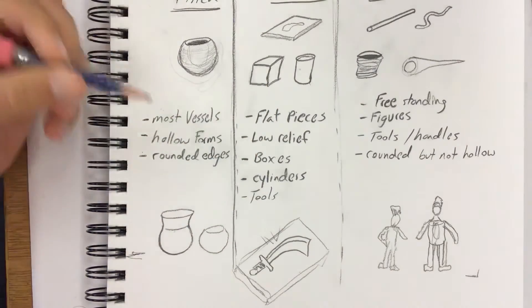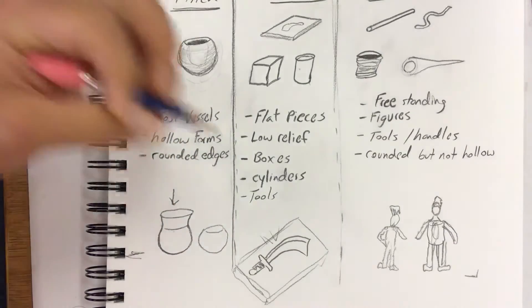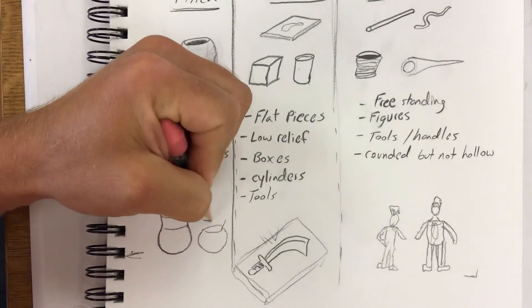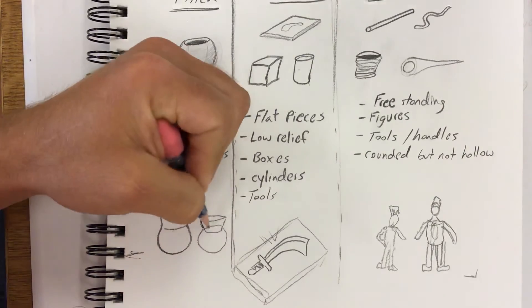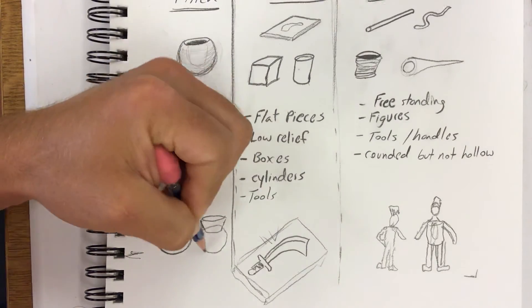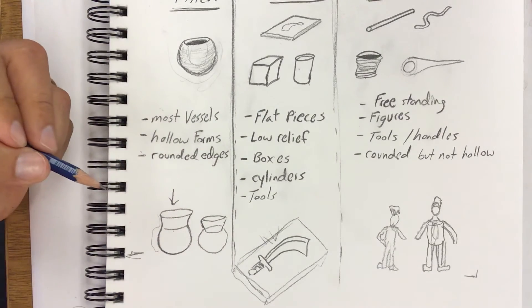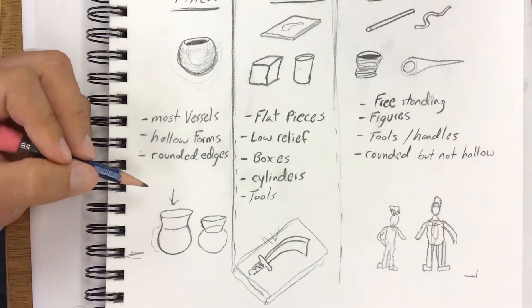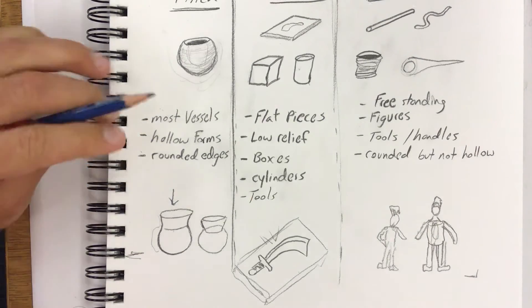And then once you have the pinch pot, we can roll a slab out and build this upper rim and then attach this upper rim on here to get the pot that you want. And then when those are connected, it will be one smooth shape like this. So it's okay to use multiple parts. Some shapes will be harder to do because we are not throwing on the wheel, so just keep that in mind.